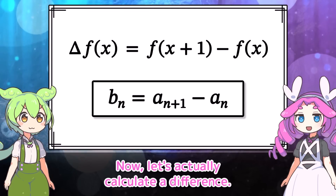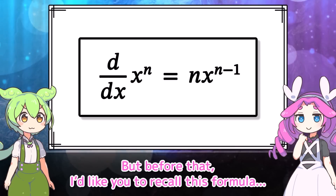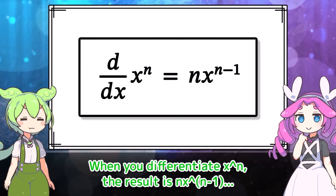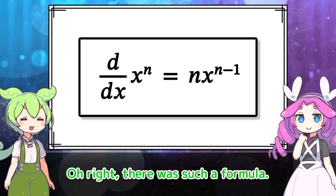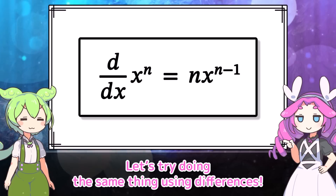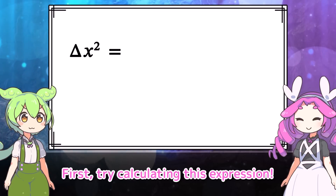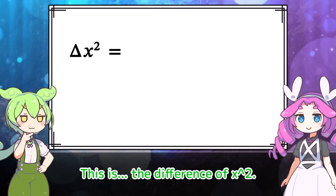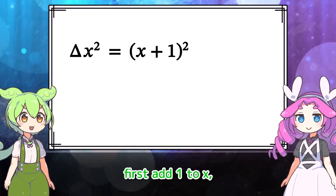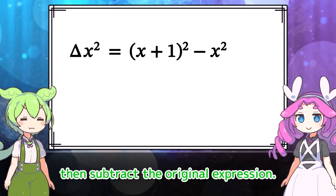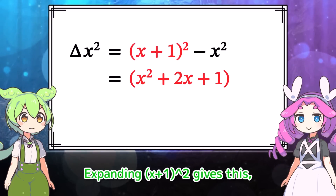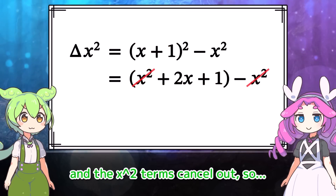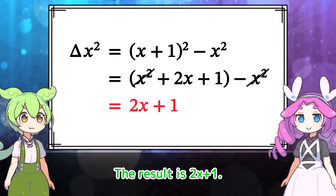Now let's actually calculate a difference. I'd like you to recall the formula: when you differentiate x to the n, the result is n times x to the n minus 1. Let's try doing the same thing using differences. Try calculating the difference of x squared. Since the change in x is set to 1, first add 1 to x, then subtract the original expression. Expanding x plus 1 squared gives this, and the x squared terms cancel out, so the result is 2x plus 1.